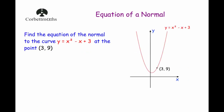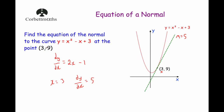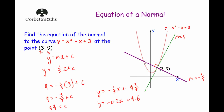So to find the equation of a normal: differentiate to find the gradient function of the curve; put in the x value of the point you want the normal through — that tells you the gradient of the tangent; do the negative reciprocal to find the gradient of the normal; put that gradient into y equals mx plus c along with the point; that tells you c, and then you have the equation of the normal.